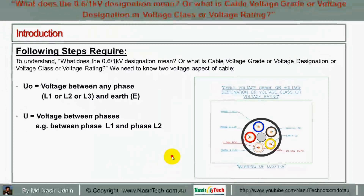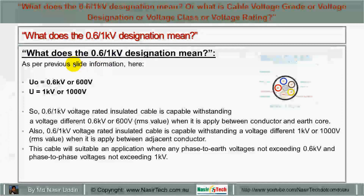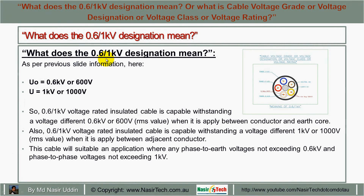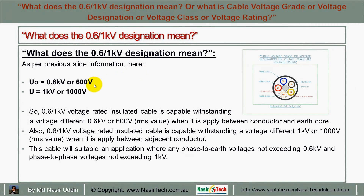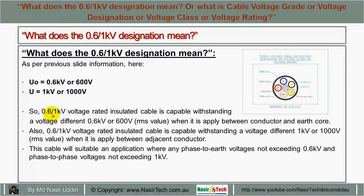With the above information, when we mention the 0.6/1 kV designation, this means U0 equals 0.6 kilovolt or 600 volt, and U means 1 kilovolt or 1000 volt.